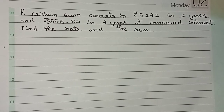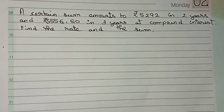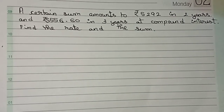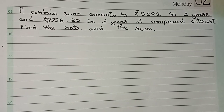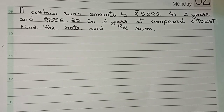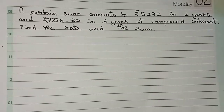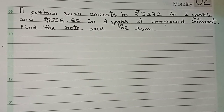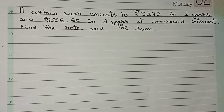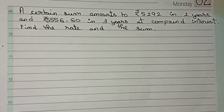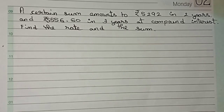Hello guys, welcome to this video. In this video, the question is: a certain sum amounts to Rs 5,292 in two years and Rs 5,556.60 in three years at compound interest. Find the rate and the sum.